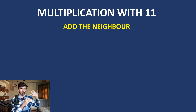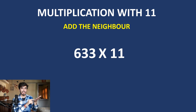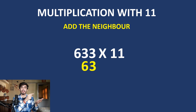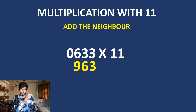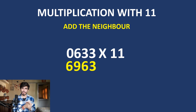For example, 633 times 11. For 3, there is no neighbor, so 3. The next 3 has a neighbor 3, so 3 plus 3 equals 6. Then 6 has neighbor 3, so 6 plus 3 equals 9. For the leading 0, the neighbor is 6, so 6. The answer is 6963. See how quickly you can calculate multiplication with 11.